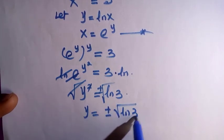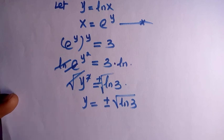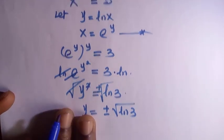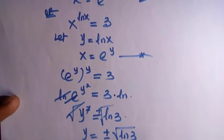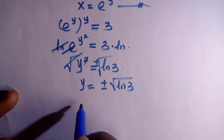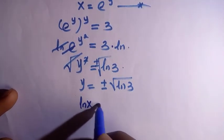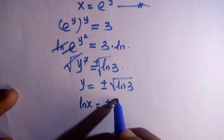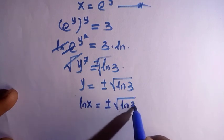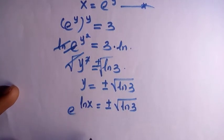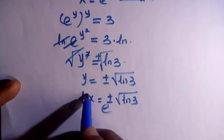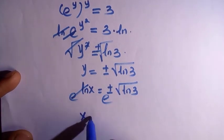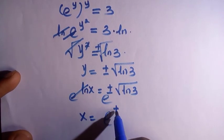We have the value of y here, which is ln x, so we replace it as ln x equals to ±√ln 3. By placing exponential to both sides, these cancel, and x equals to e^(±√ln 3).